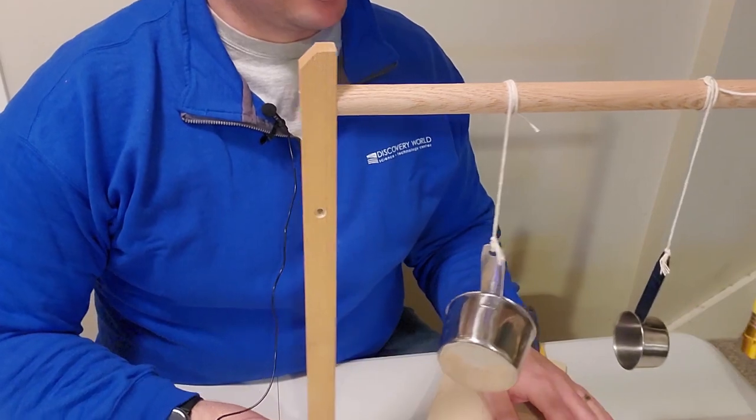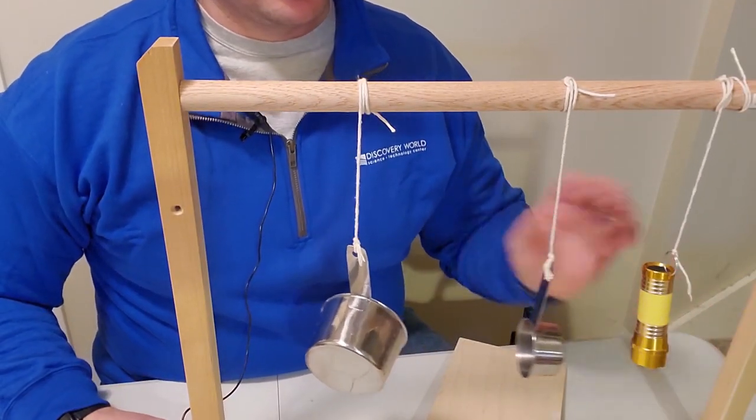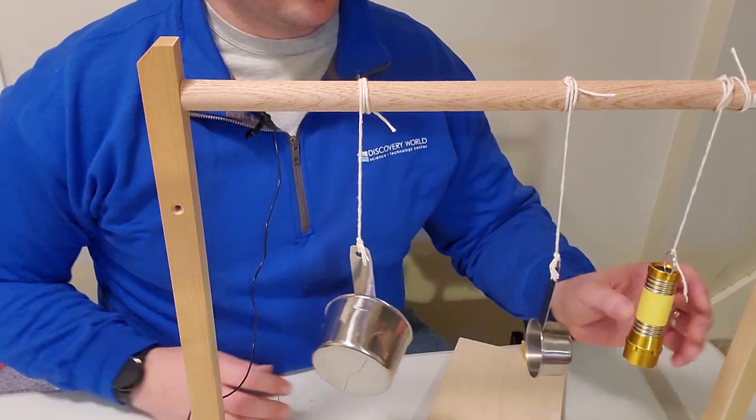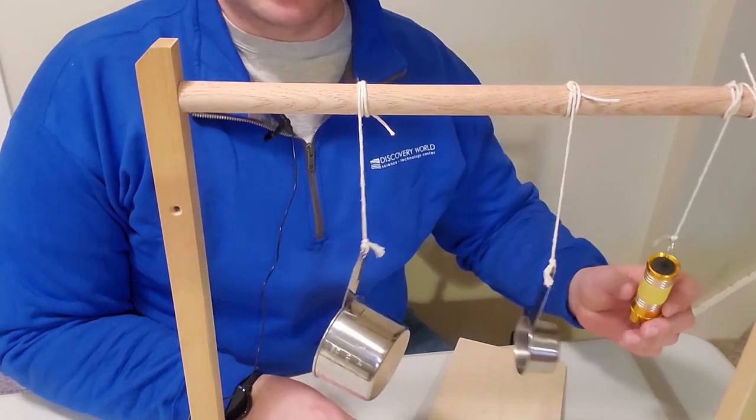Let's try it with one other thing. Found this flashlight. Now this flashlight is heavier than both of these things together. When I let it go, it can swing just like the measuring cups did.